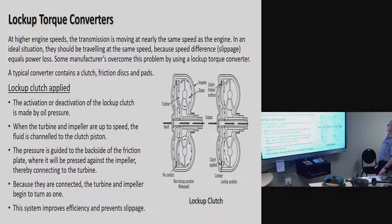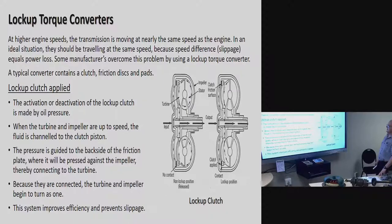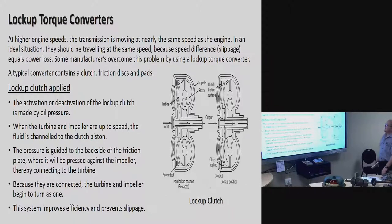Lock-up torque converters. At higher engine speeds, the transmission is moving at nearly the same speed as the engine. Ideally they should be travelling at the same speed. However, there can be some slip, which equals power loss. Some manufacturers overcome this problem by using a lock-up torque converter.